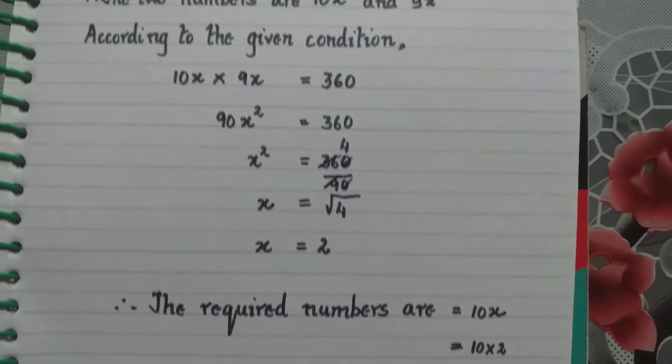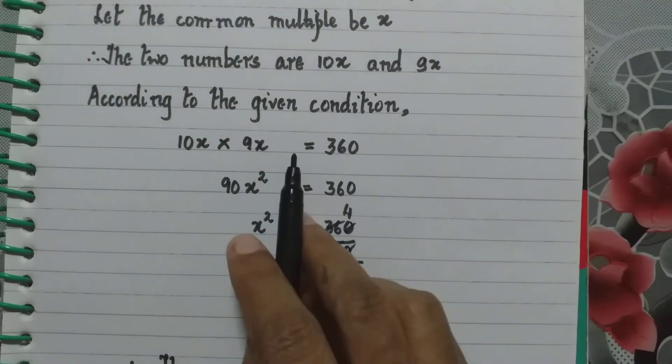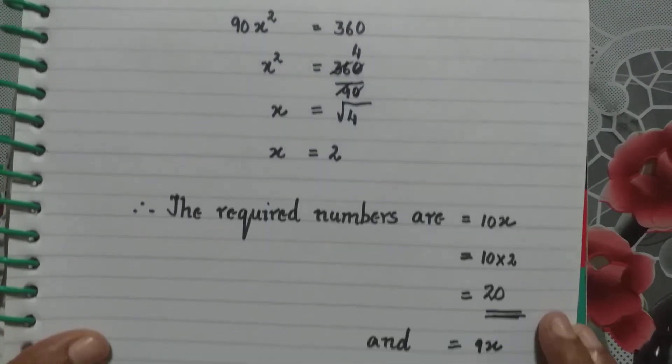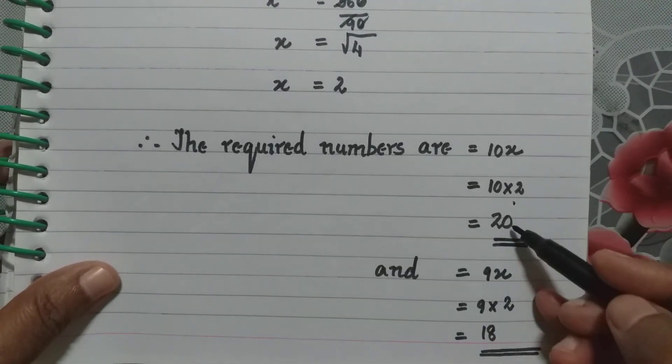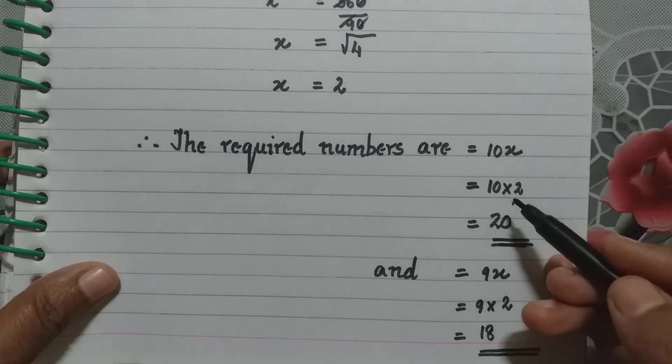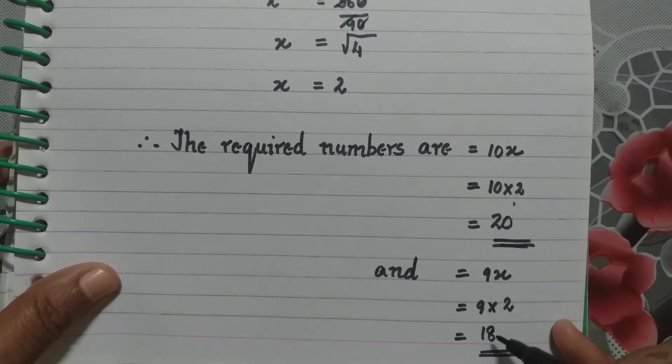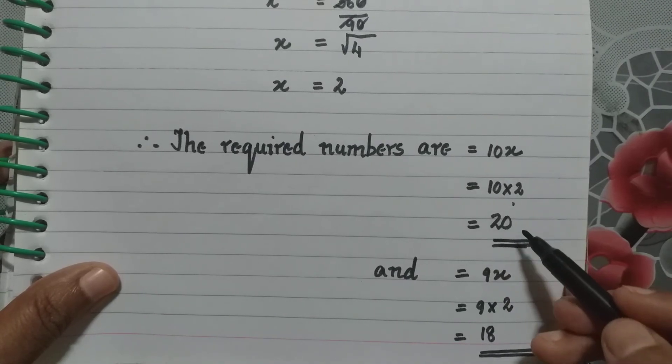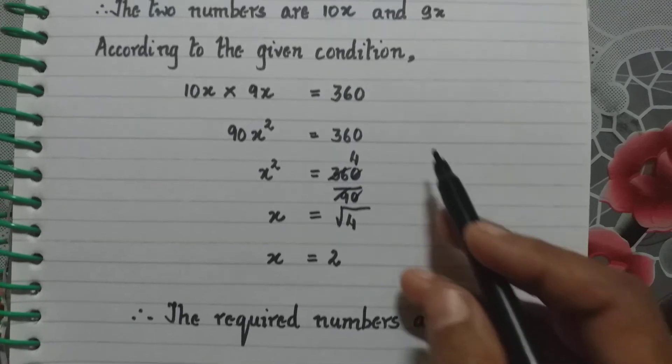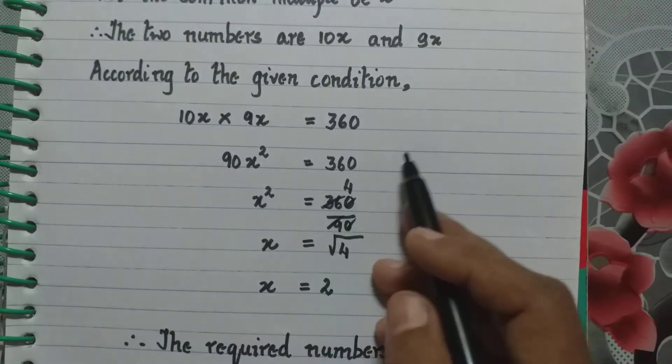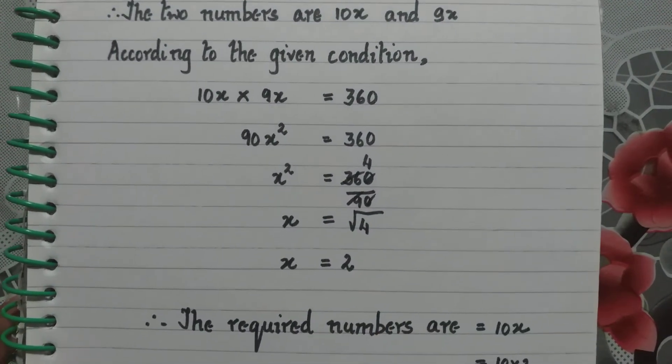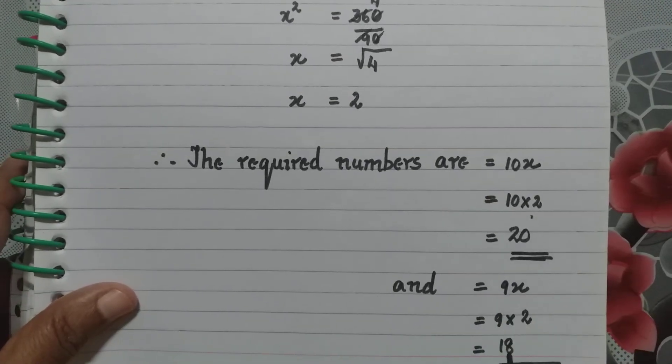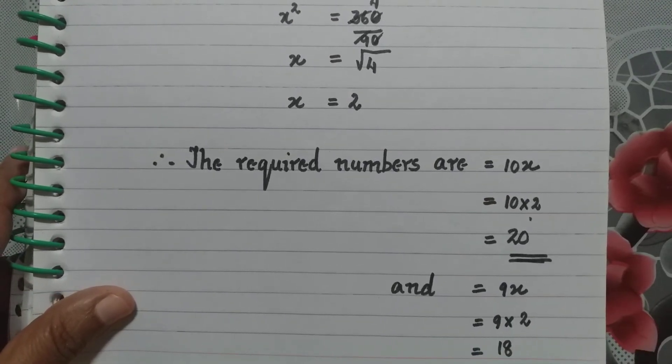Now how will we confirm our answer? They said the product of the numbers is 360. That means I have to multiply both of them. What are the two numbers I have got? 20 and 18. 18 into 2 is 36, and to 36 I put a 0, I get 360. What have they given the product of the numbers as? 360. So our answer here, the numbers are 20 and 18, is right.